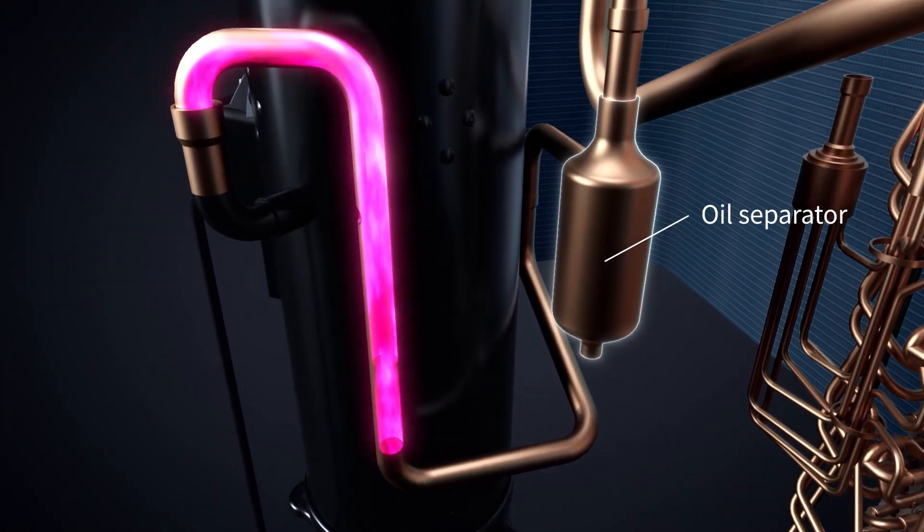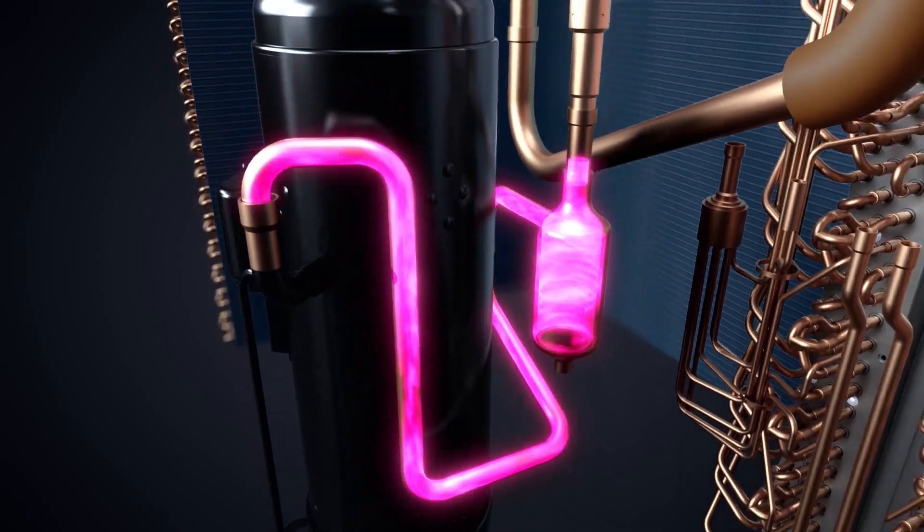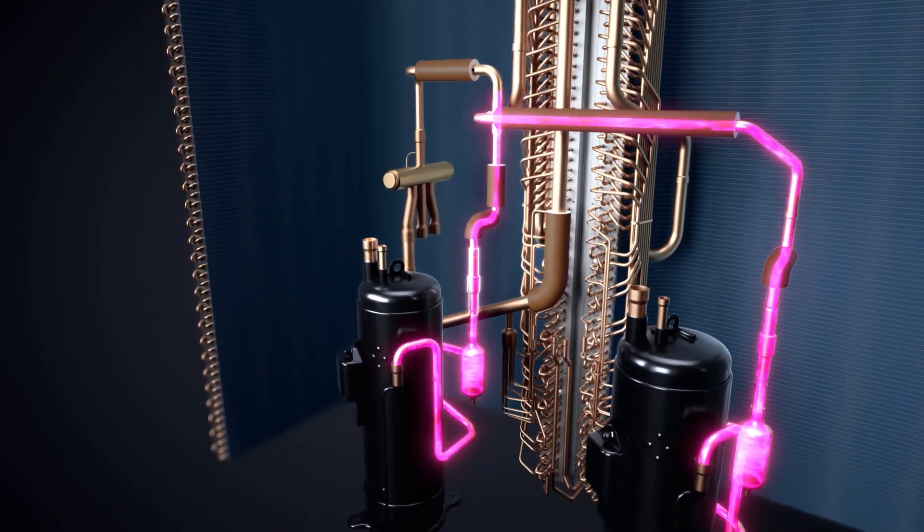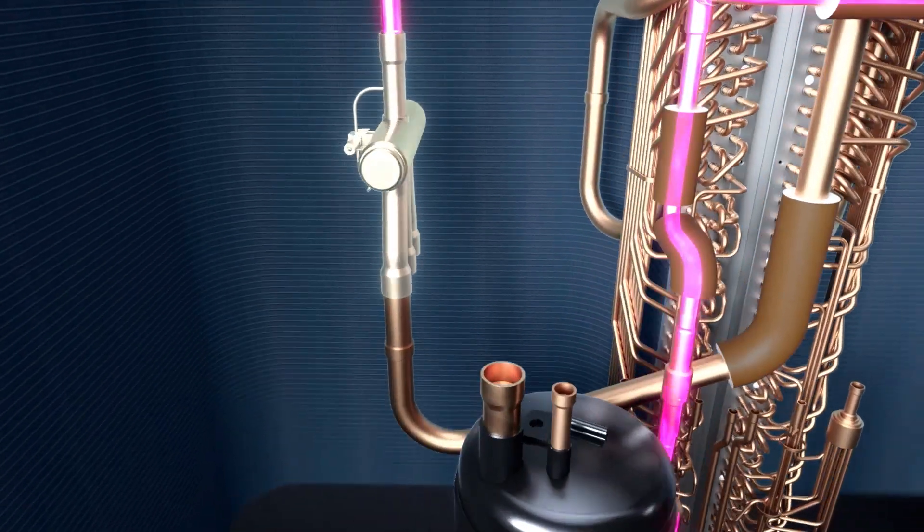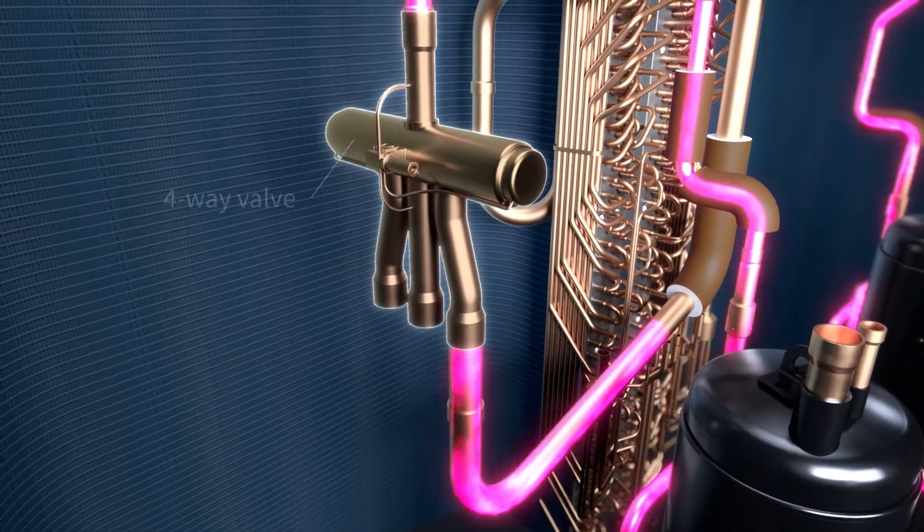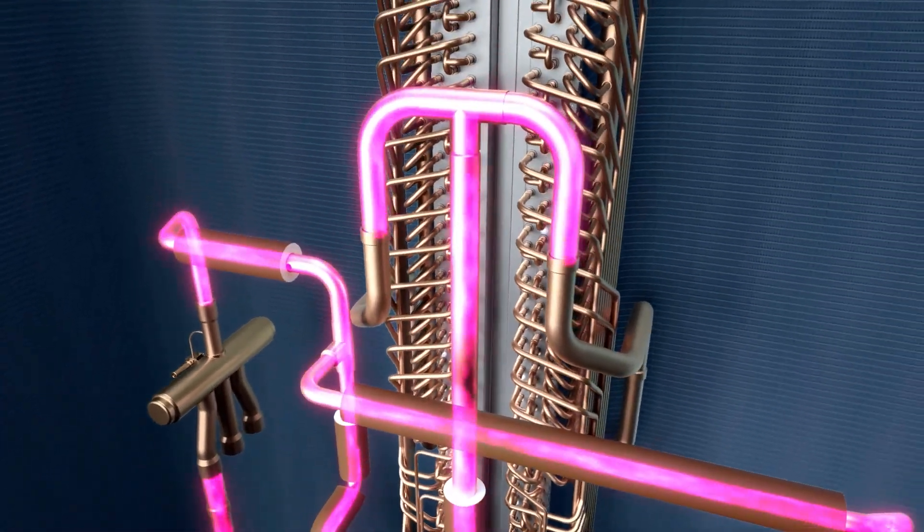From the scroll compressor, first, refrigerant goes through the patented oil return control cycle via the oil separator. Then through a four-way valve, which is the crucial part of the heating cooling changeover.